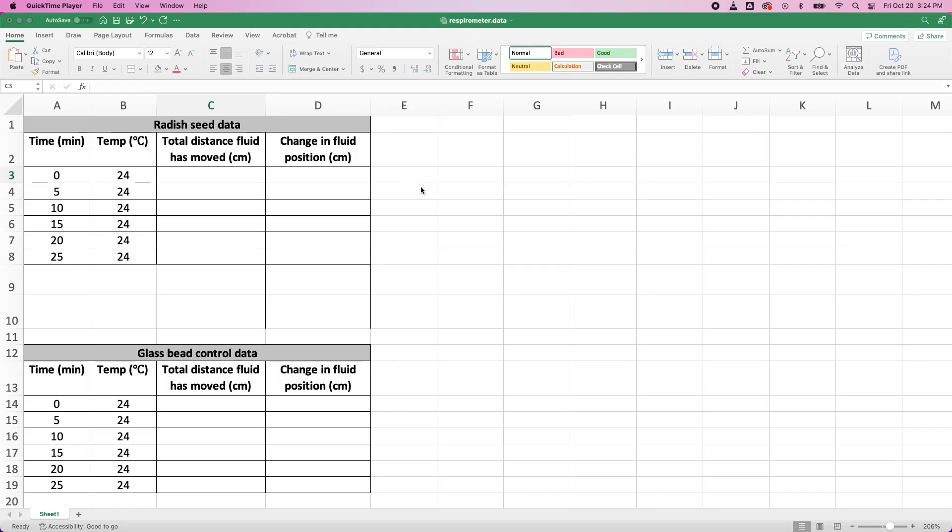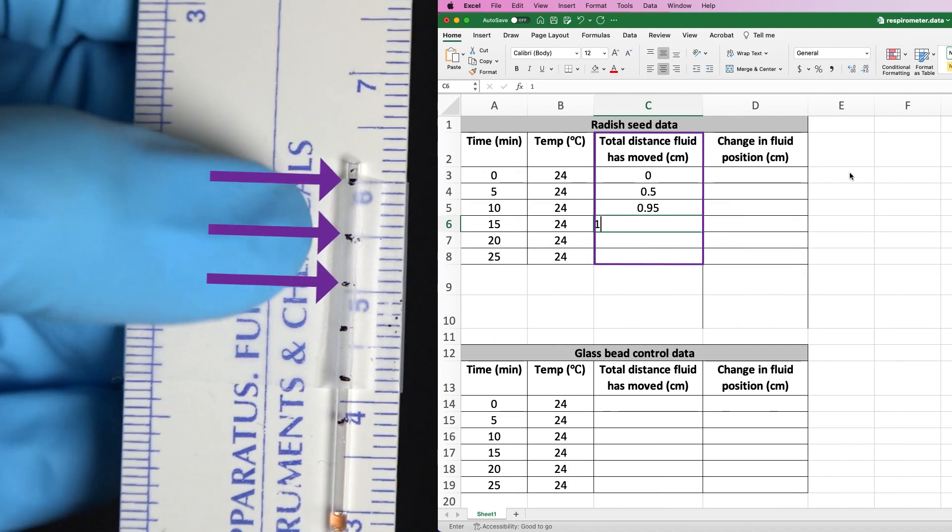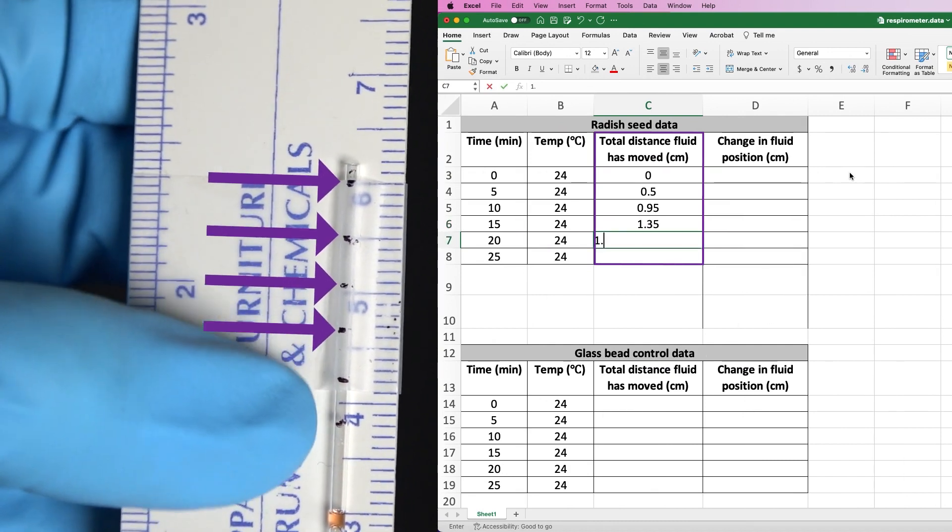Once the experiment is complete, I'll enter my measurements into data tables, one for each syringe. In the first column are my time points starting at 0 minutes, my initial measurement, and going in increments of 5 up to 25 minutes. My temperature readings go into the second column, and then the actual measurement of how much the fluid moved in the capillary tube will go in the third column. I'll use my ruler to find the length of my markings from the starting point at time zero.